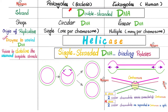Both bacteria and you have double-stranded DNA. However, bacterial DNA is circular, while your DNA is linear. Moreover, bacteria start one origin of replication, but eukaryotes start multiple origins of replication, even within the same chromosome — because you have more genes, more cells, and more proteins needed. You are a more complex organism.